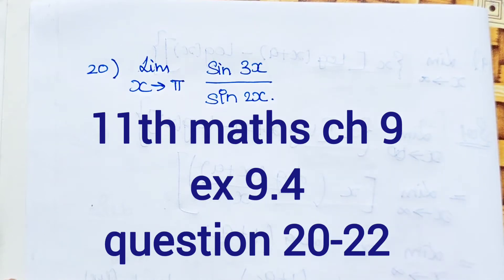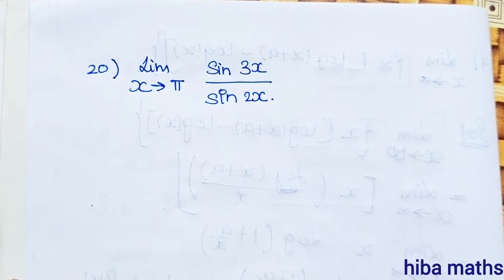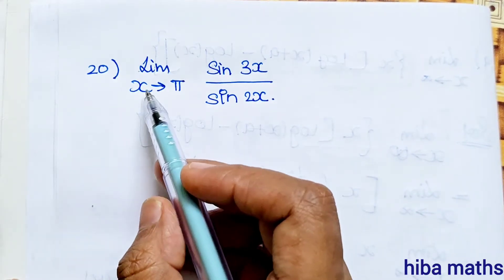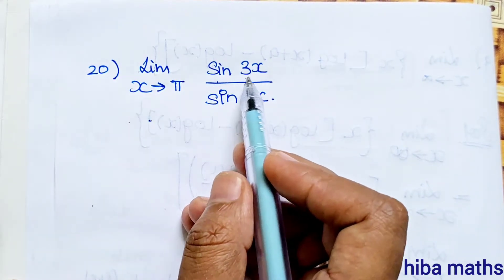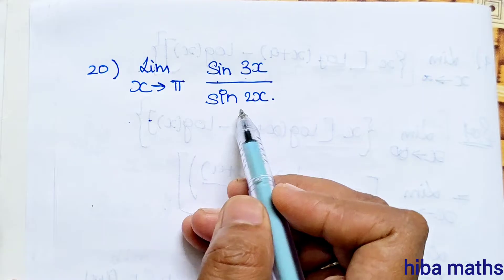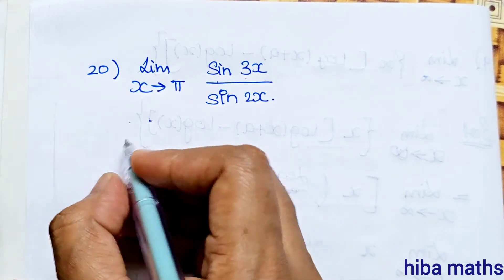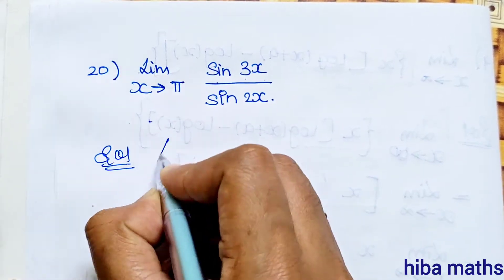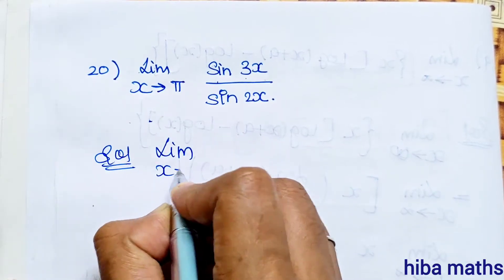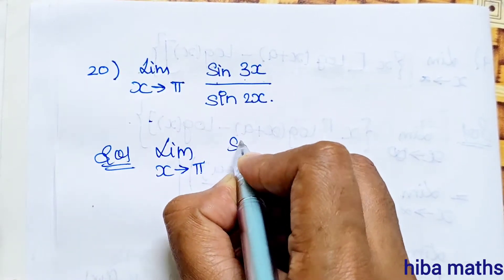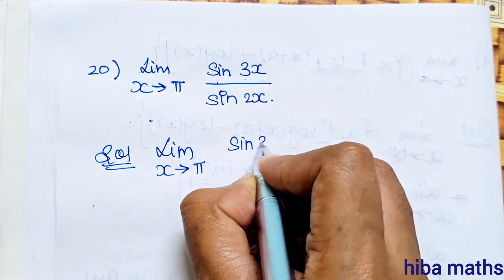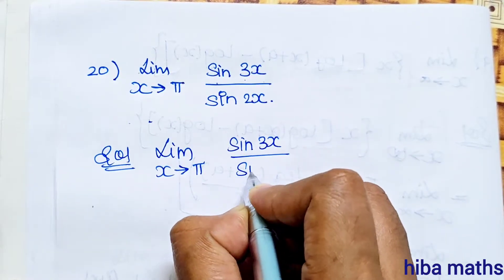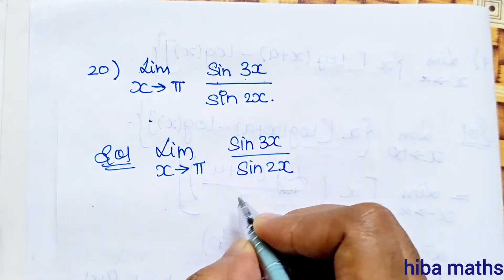Hello students, welcome to Heba Max 11, Standard Max Chapter 9, Exercise 9.4, 20th question. I will solve the problem. Limit x turns to pi, sin 3x by sin 2x. Solution is limit x turns to pi, sin 3x by sin 2x.